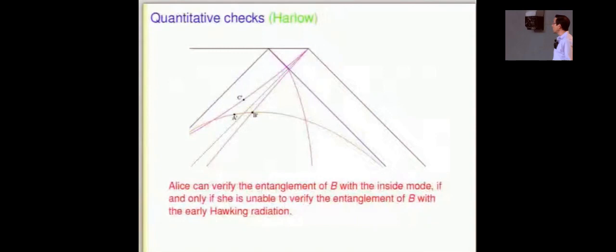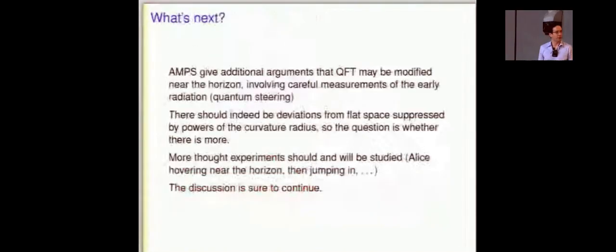So the upshot here is that Alice can verify the entanglement of B with A if and only if she cannot verify the entanglement of B with C and it works just barely. It's the same timescale R log R that enters into this calculation. So again, there seems to be a conspiracy against somebody seeing both entanglements as Dan showed.